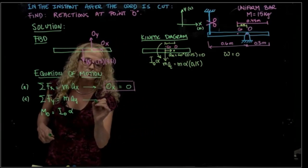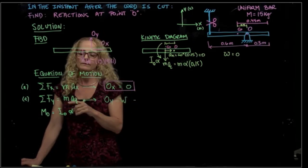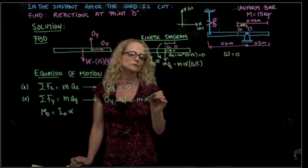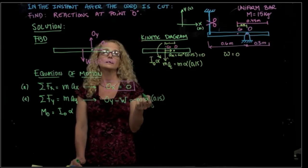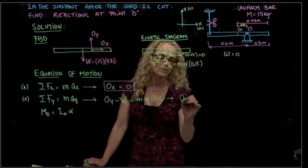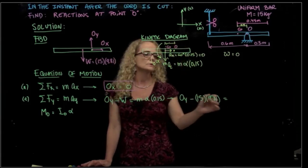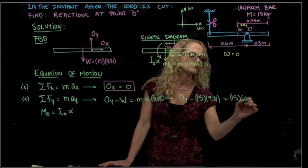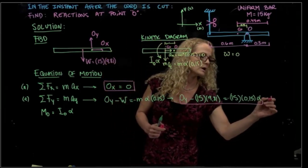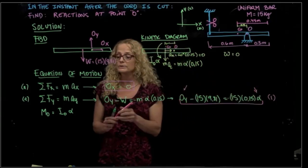The second result will be forces in Y, which will be OY minus weight equals mass times angular acceleration times 0.15. We do not know the angular acceleration yet, so that's an unknown. Our equation will be OY minus 15 times 9.81 equals the mass, which is 15, times 0.15 times alpha. This is one of my equations that I would use. I have two unknowns, so I need a third equation, which will be that one here.